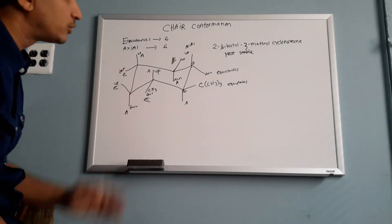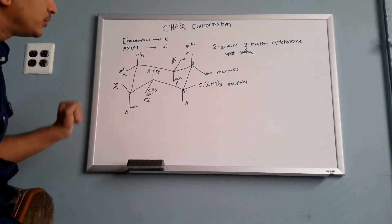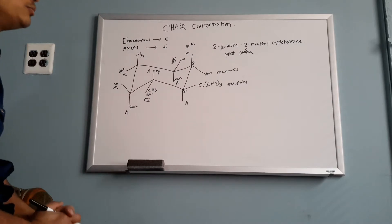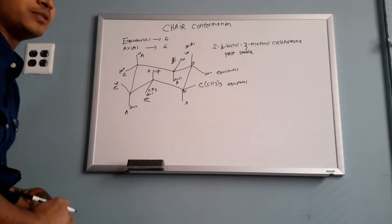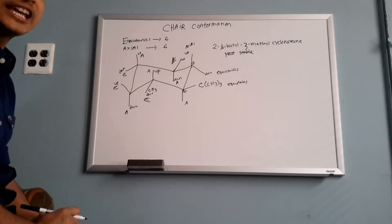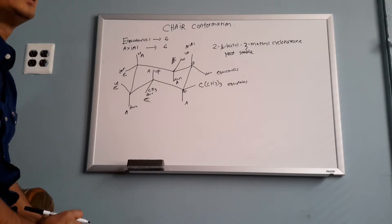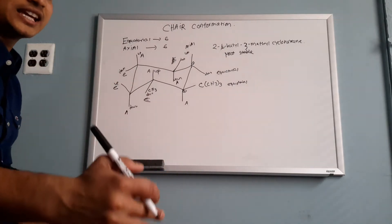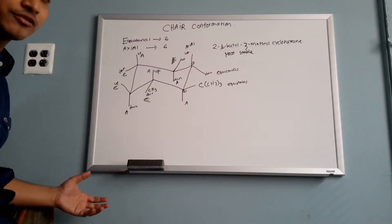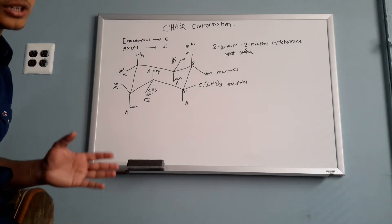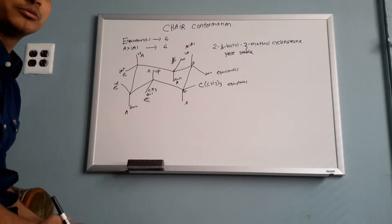This is your most stable conformation. Why did I draw the up and down positions? Because most students make a mistake in chair conformation — they think trans is always most stable. It's true in some cases, but in cyclohexane chair conformation, sometimes cis can be most stable, or trans can be most stable. Trans can be least stable, and cis can be least stable. I'll show you this now.